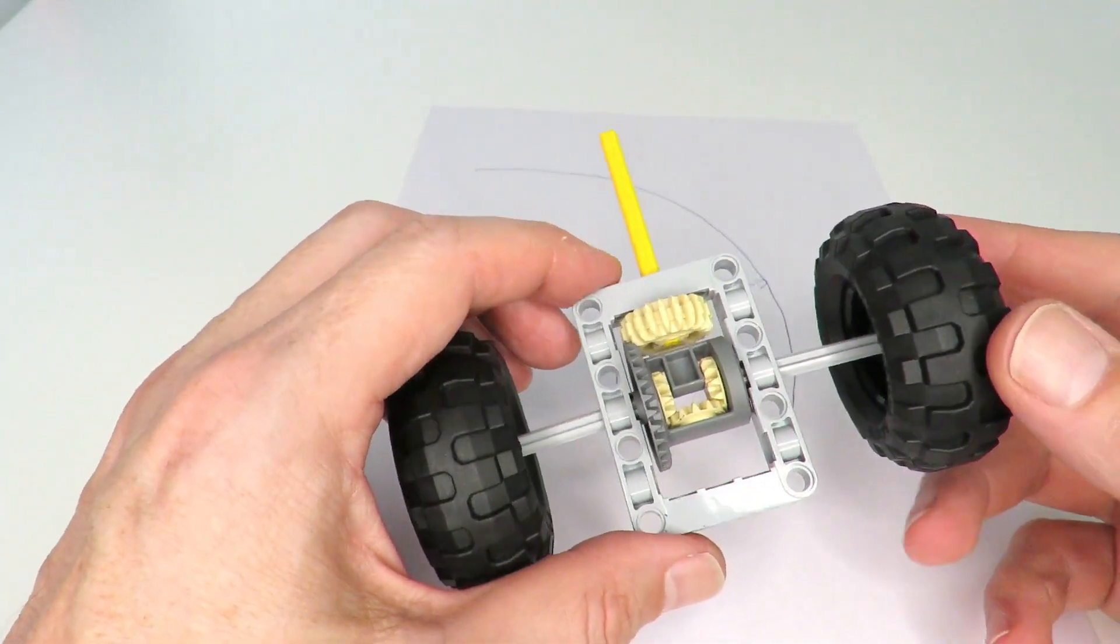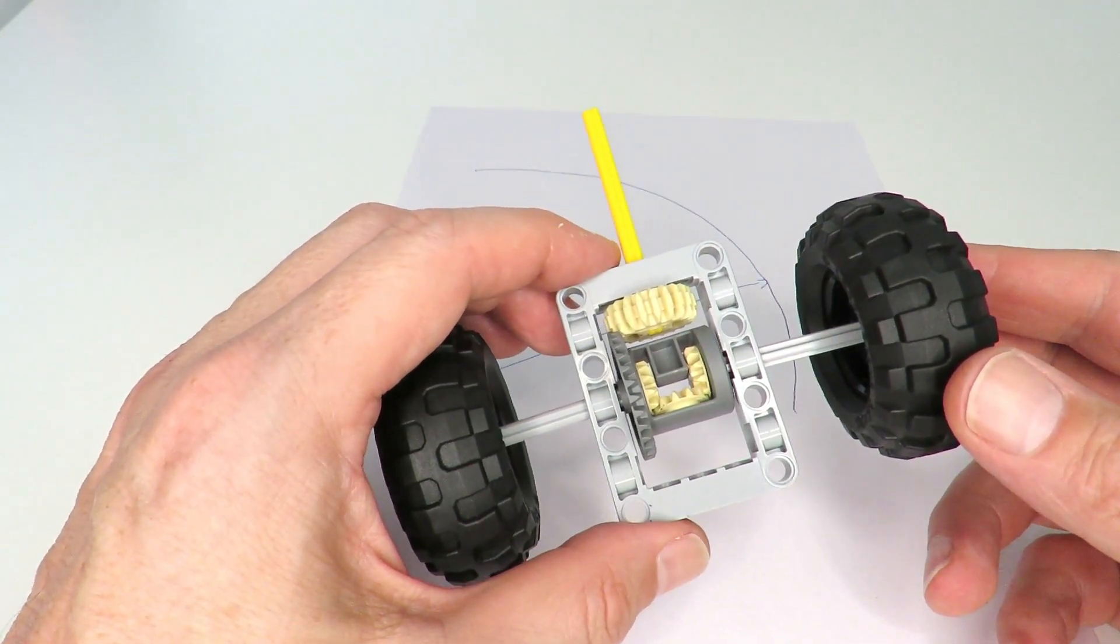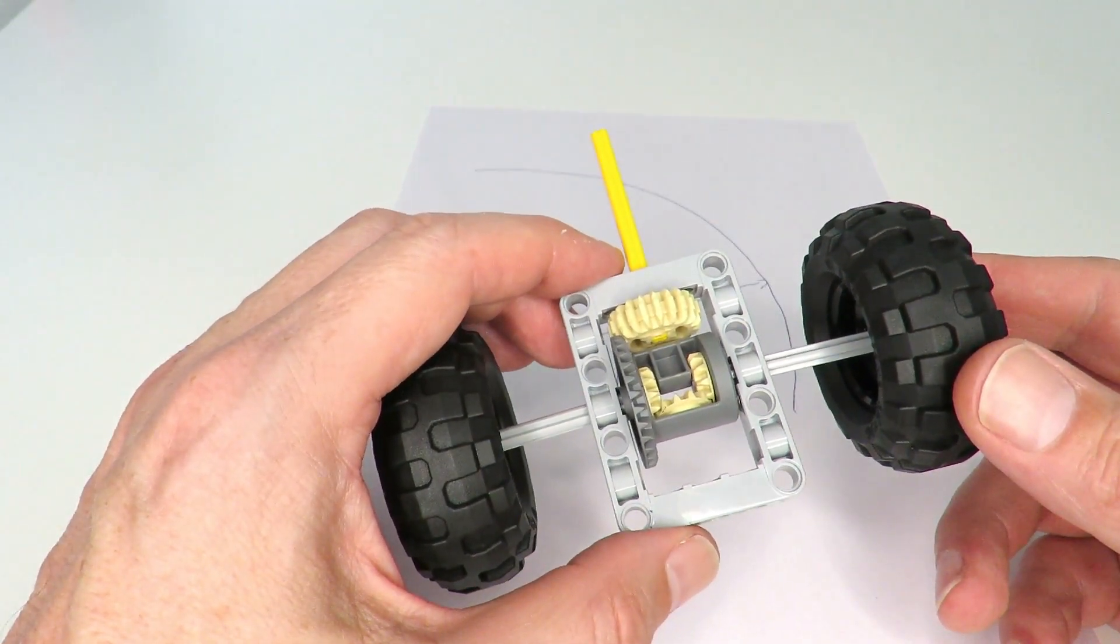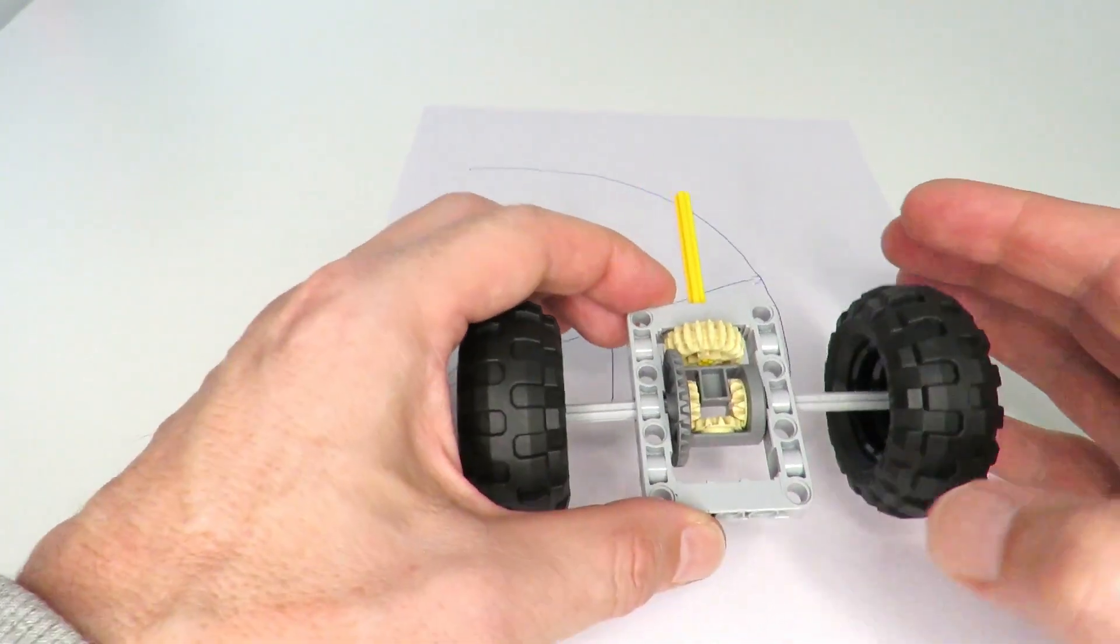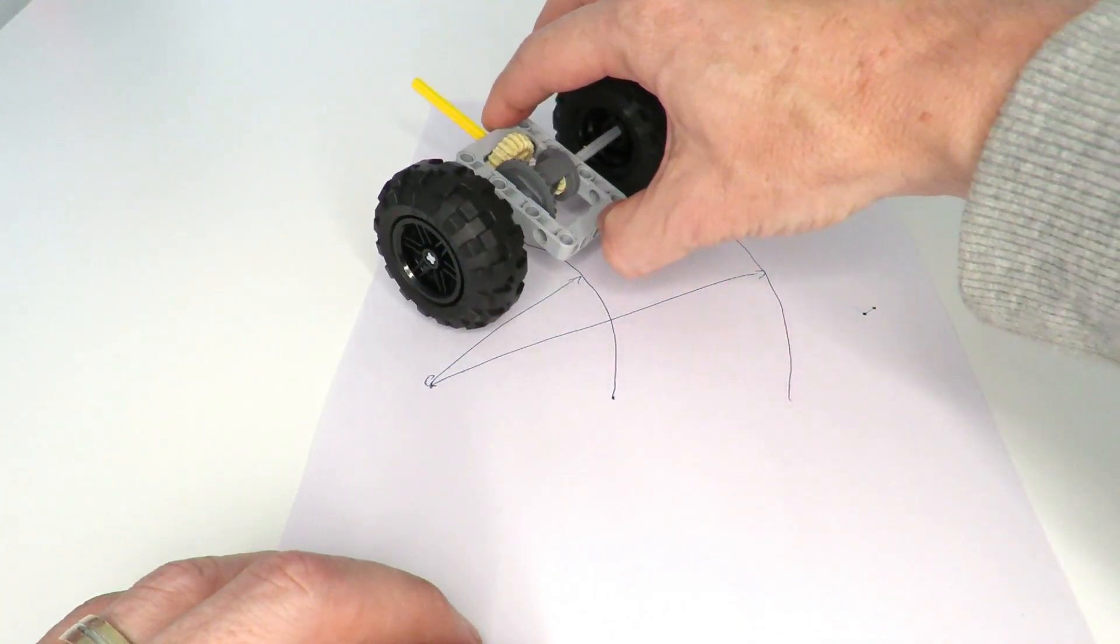The solution, of course, is the well-known differential gearing mechanism. You would have all come across this at some point when building one of the larger Lego Technic vehicle sets. They pretty much all use some sort of differential gearing mechanism to drive the wheels, and this allows the vehicle to go around the corner without any slippage.